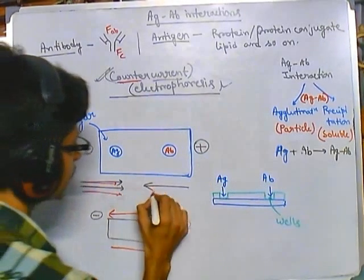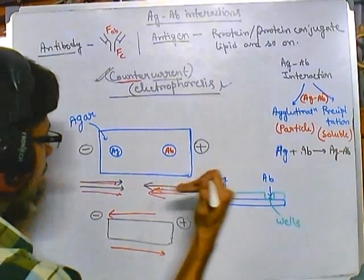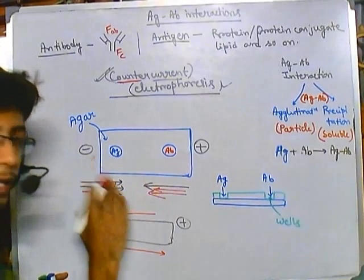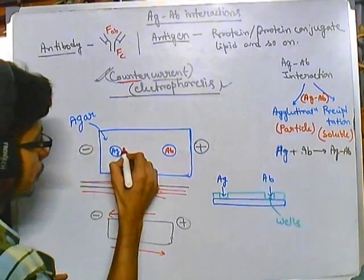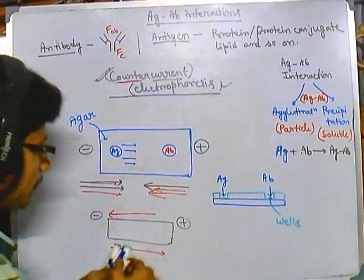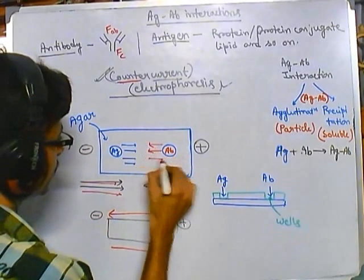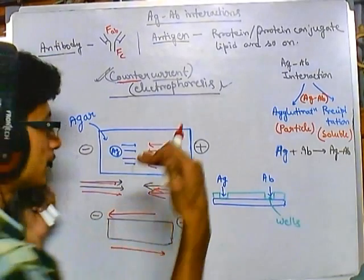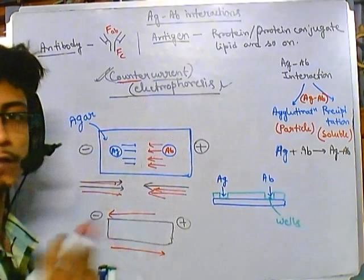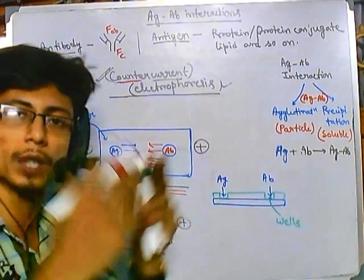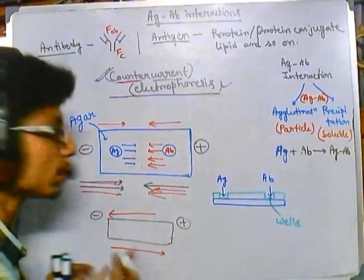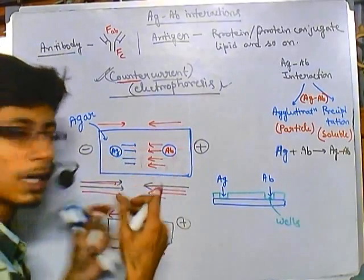In counter current electrophoresis, movement occurs from both opposite directions — electrophoresis from this direction and also from the opposite direction. The electric current pushes the antigen to diffuse through toward the middle region, and simultaneously forces the antibody to move toward the center from the other side. Counter means from the opposite direction, so both antigen and antibody are driven toward the middle line.